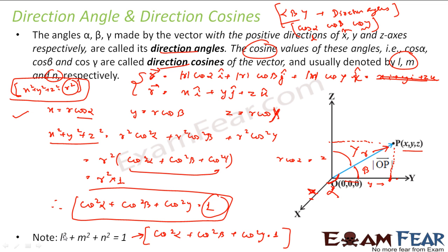And cos alpha is l, cos beta is m and cos gamma is n. They are just a representation. As I told, cos alpha we call l, cos beta we call m and cos gamma we call n, where alpha, beta and gamma are angles with respect to x-axis, y-axis and z-axis for a given vector. So these are the conventions we use.